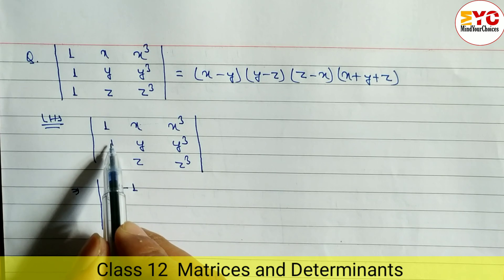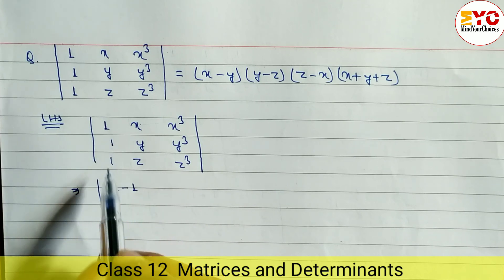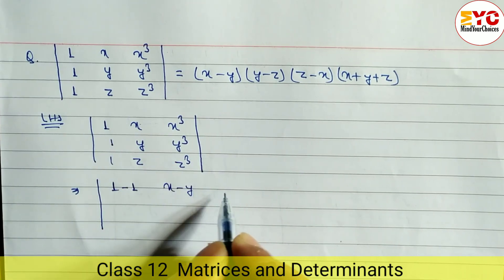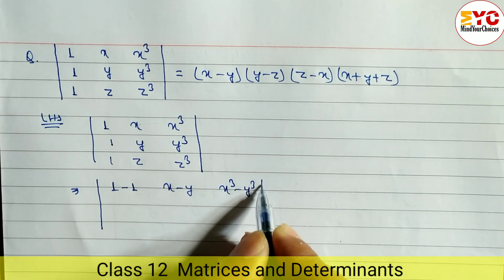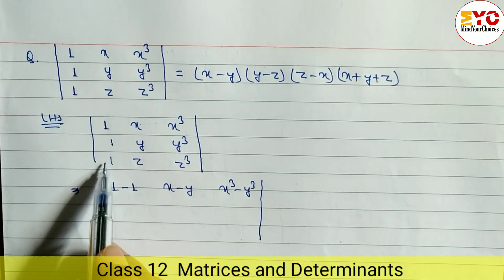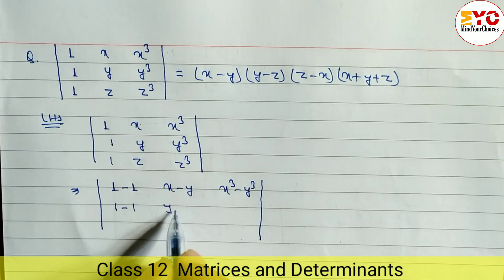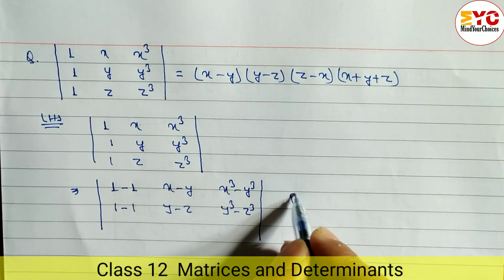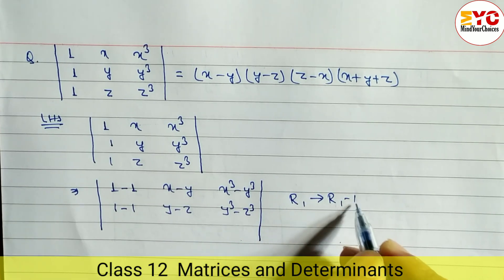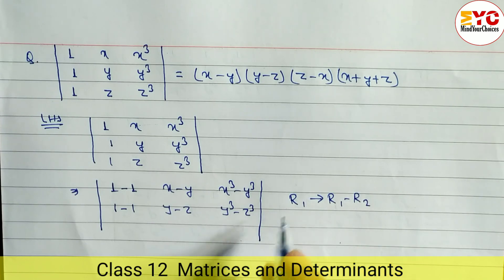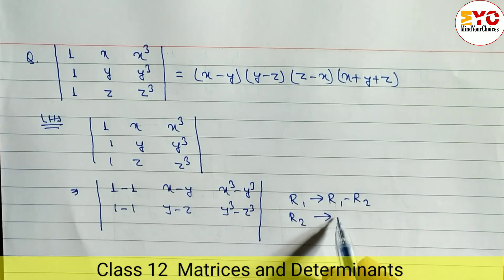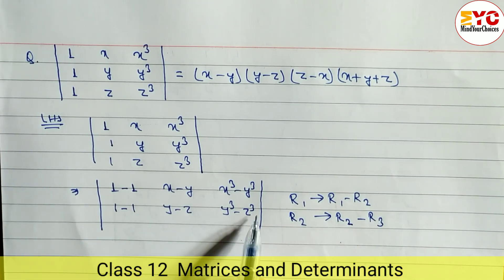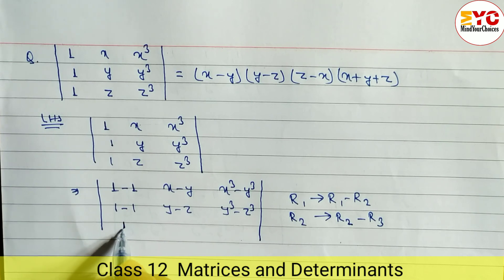When you subtract one minus one we get zero. Again second and third, when you subtract we get zero. Subtracting first row and second row gives x minus y, and x³ minus y³. Similarly for the second row, subtracting second and third gives one minus one, y minus z, and y³ minus z³. So for R1 we apply R1 minus R2, and for R2 we apply R2 minus R3.